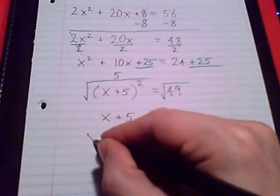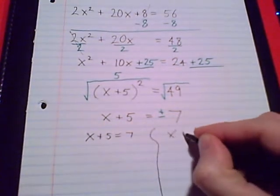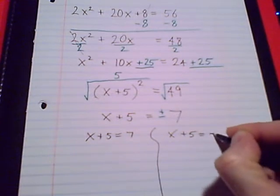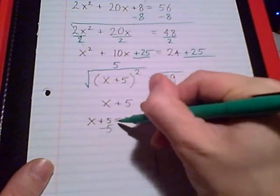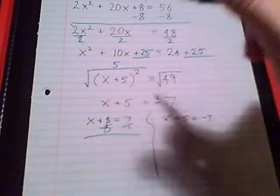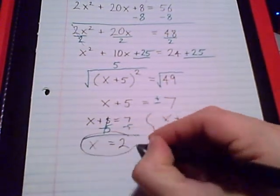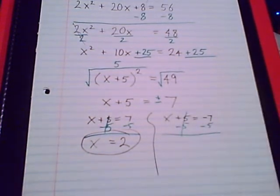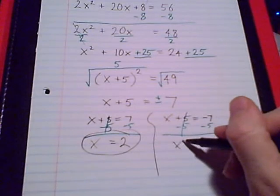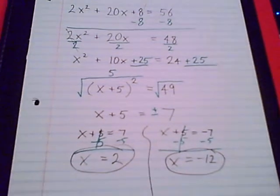Let's finish it up by splitting it up into two equations: x + 5 = positive 7, x + 5 = negative 7. Two linear equations to solve. Take away 5 from both sides, x = 2. First answer. And this other equation, take away 5, x = negative 12.